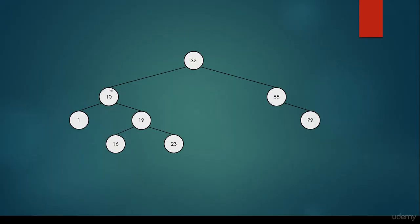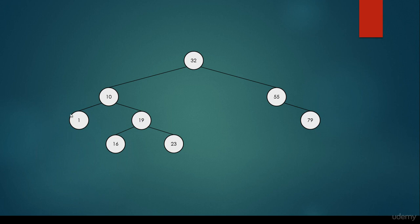As you can see, the leftmost item is the smallest item — this is the value 1. The maximum item is the rightmost item — this is 79. So we start at the root node. If we would like to get the minimum, we consider the left node. Is it None? No, we go to the left. Is it None? No, we try to go to the left, but it is None — it doesn't have any left child. So we return with this as the minimum.